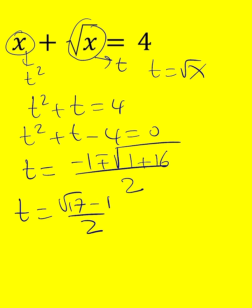And since square root of x is equal to t, we're going to set this equal to square root of x. To solve for x, we're going to square both sides. So x would be square root of 17 minus 1 divided by 2 squared.